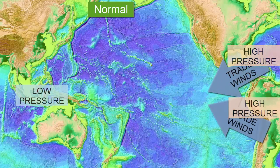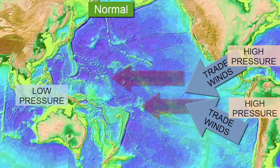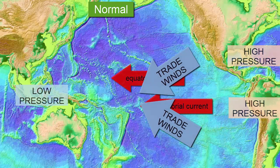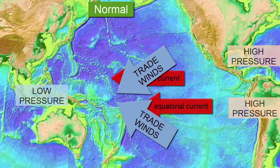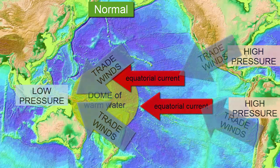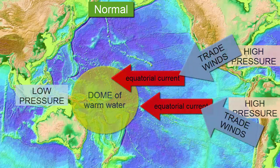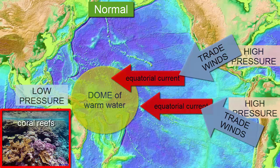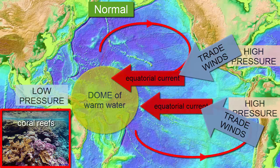These winds drag on the surface water and create the equatorial currents, water that moves westward and piles up off the eastern coasts of northern Australia and Indonesia, supporting some of the largest distribution of coral reefs in the world's oceans. Most of this dome of water is funneled north and south as part of the western boundary currents and continues its movement through the world's surface gyres.